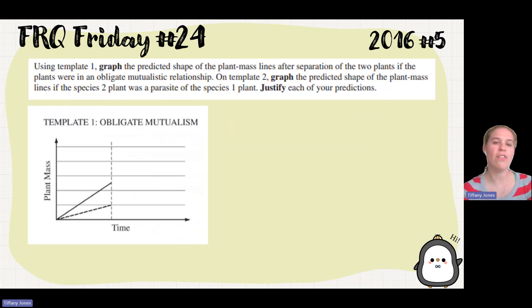So using template 1, graph the predicted shape of the plant mass lines after separation of the two plants if the plants were in an obligate mutualistic relationship.